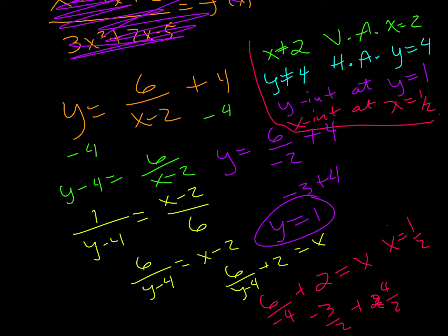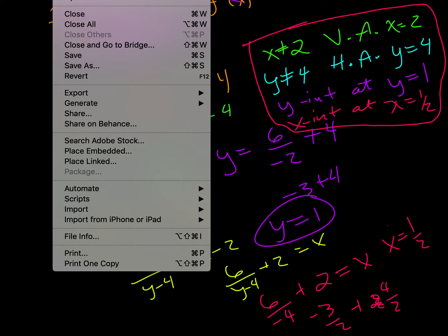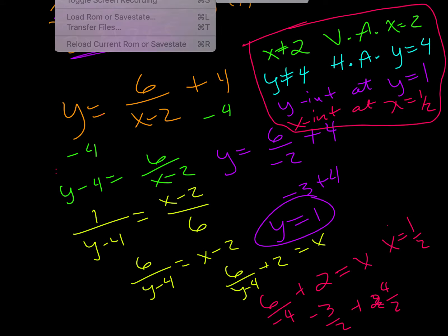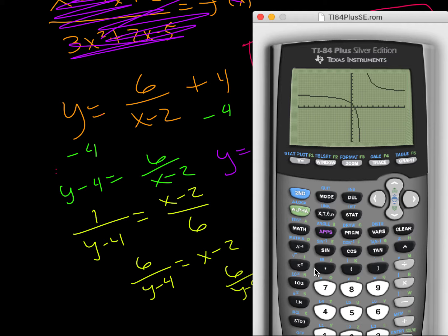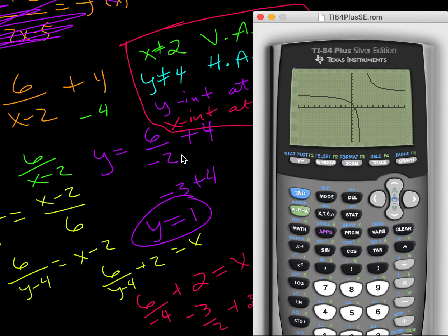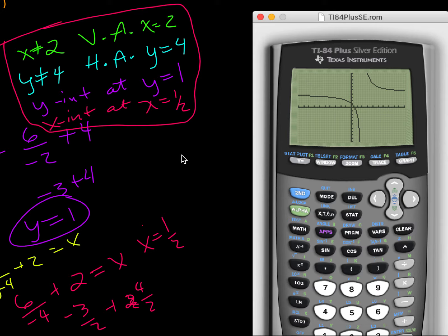Now we have all of this information that can help us graph it a little more precisely. If we just go to our calculator and graph this — 6 divided by x minus 2, plus 4. When we're sketching this, we look at our vertical asymptote at x equals 2. That looks like a vertical asymptote right there. Then y equals 4 — that matches up.